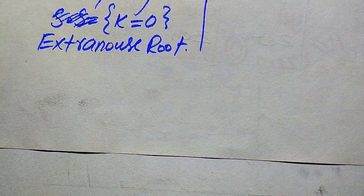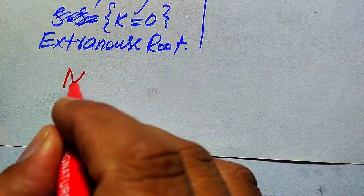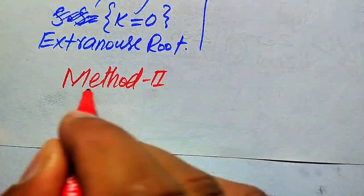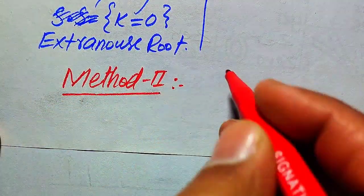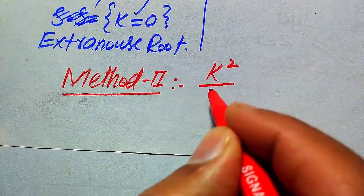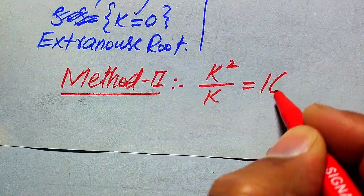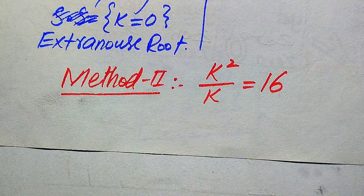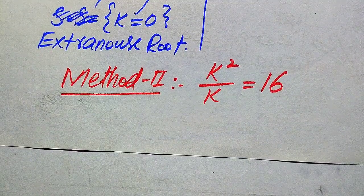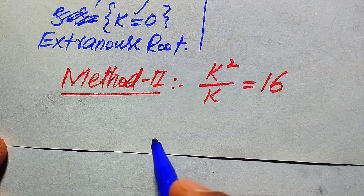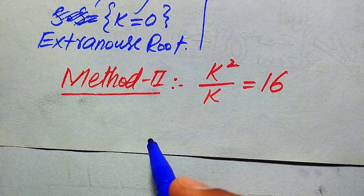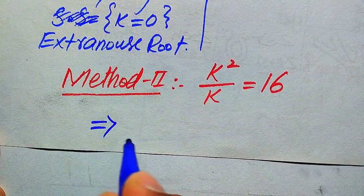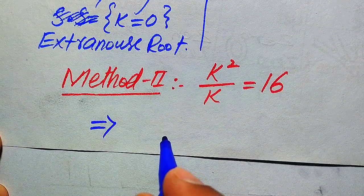Now we solve this problem using a second method. We copy down the given equation: k squared divided by k equals 16. The second method is the quickest method, and we will use a nice exponential law to quickly get the value of k.